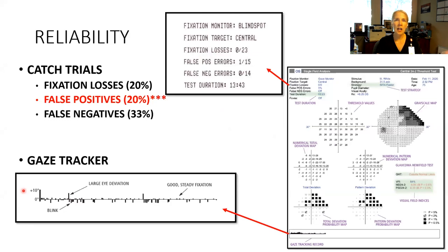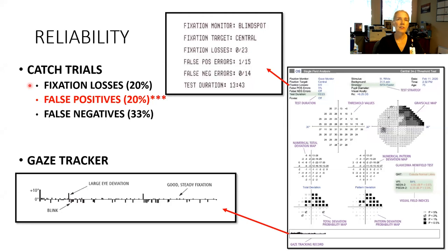Reliability is really important. We don't want to spend time evaluating a test that's not giving us good information. Our catch trials are located in the upper left corner of most visual field printouts, and we have three catch trials. Fixation losses — historically 20% or higher is considered an unreliable test — but there are a lot of patients who will have higher than 20% fixation losses, maybe the instrument has misplotted the blind spot, or they have a very small optic nerve, and you can still evaluate that field. I rely a lot on the technician who runs the test. There's also another fixation metric we can use — the gaze tracker. When we see a mark that goes up, the patient looked away temporarily; a mark that goes down means the patient got caught during a blink.